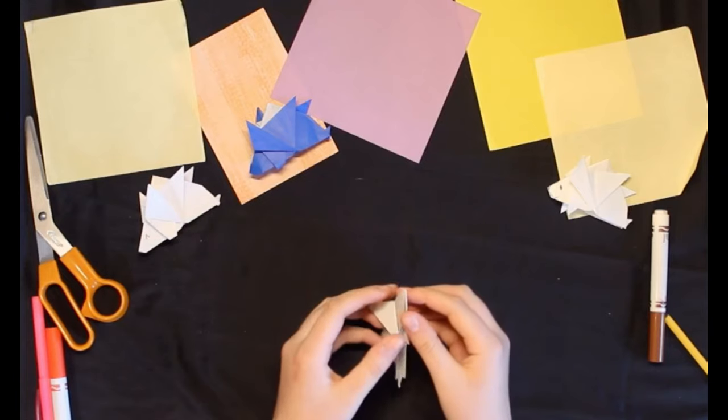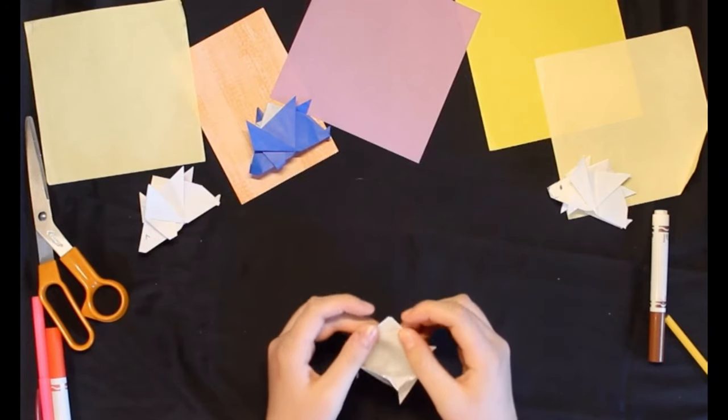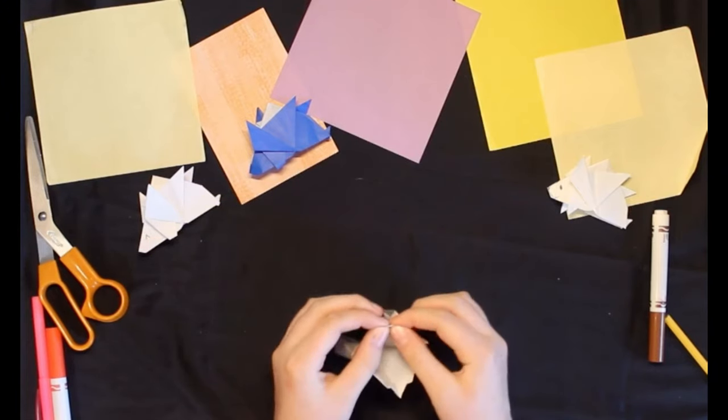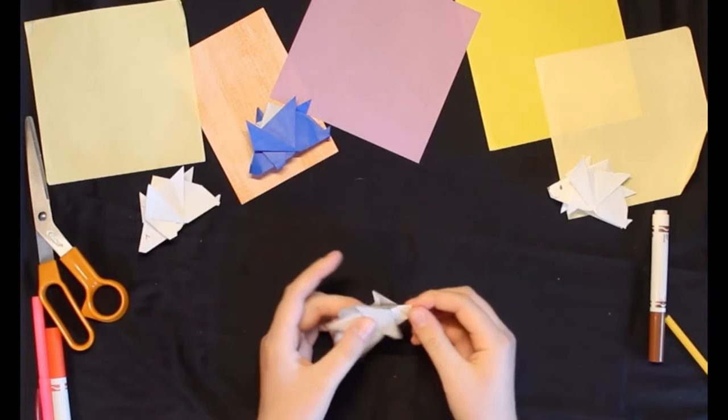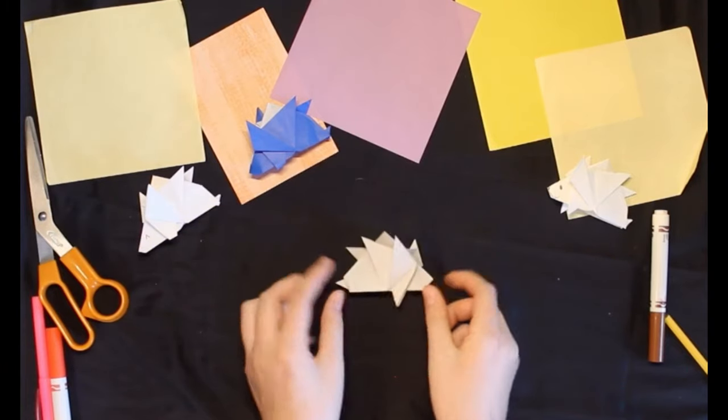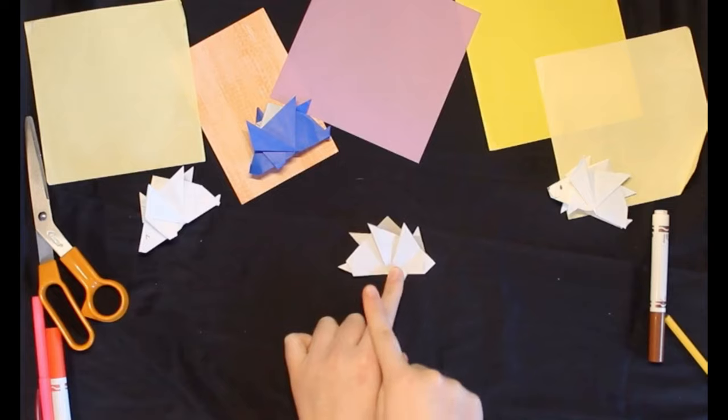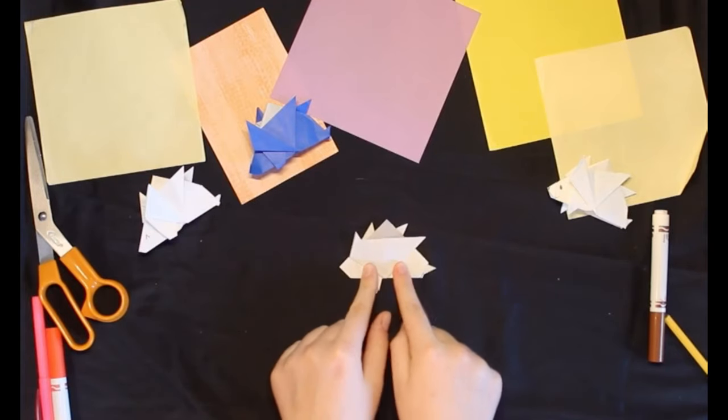Now, lastly, we're going to do the face. So, taking him, you're going to kind of open flat the face. And you could just fold a little bit of the triangle up. Then, fold him back. And you got a little nose. Oh, he's so cute.